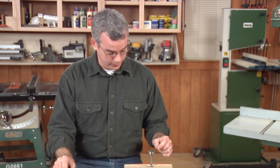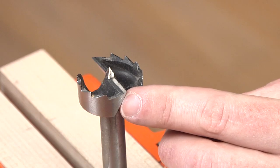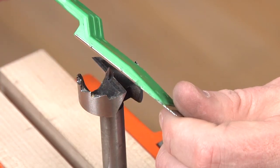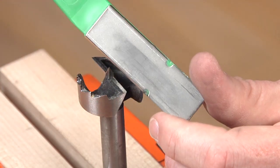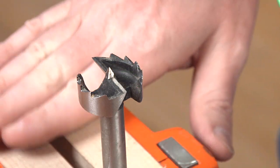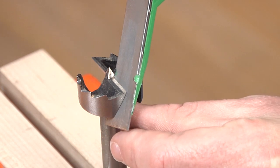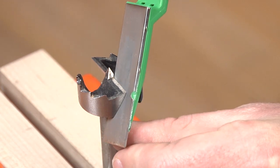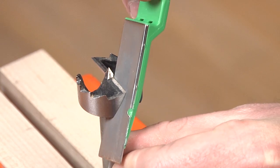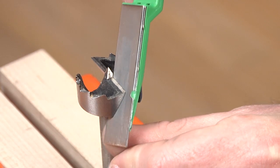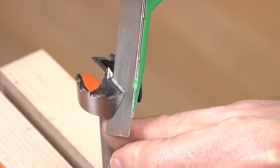The second step for both the serrated tooth Forstner bit and the single cutting rim Forstner bit is to hone the leading edge of this chipper. And so to do that we're going to go to our mini diamond file here, and I've got the bit clamped in the vise here. So you just want to match the edge of that chipper and give it a few strokes. Keep it flat up against there. Again, we're just honing this, we don't really need to remove a lot of material.